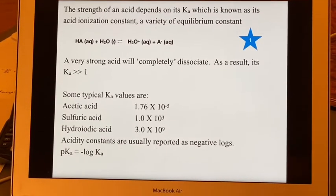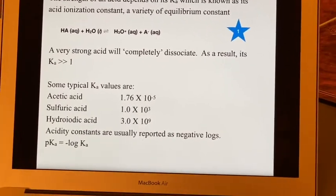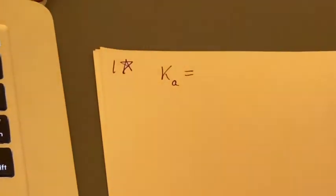Strength of an acid depends on its value of Ka. Ka, where the A is standing for acid, is going to be products.